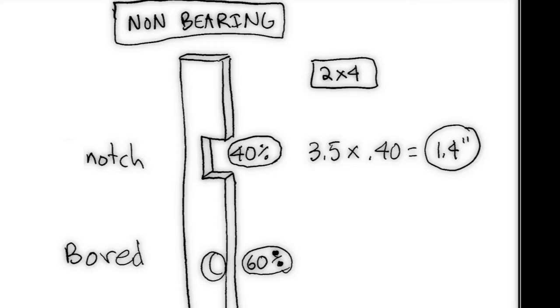So if I drill a hole on a 2x4 that is non-bearing I can go 60% 3.5 times 0.6 we're going to get 2.1 inches. Again on a non-bearing 2x4 I could maybe almost run an inch and a half pipe but kind of limited.